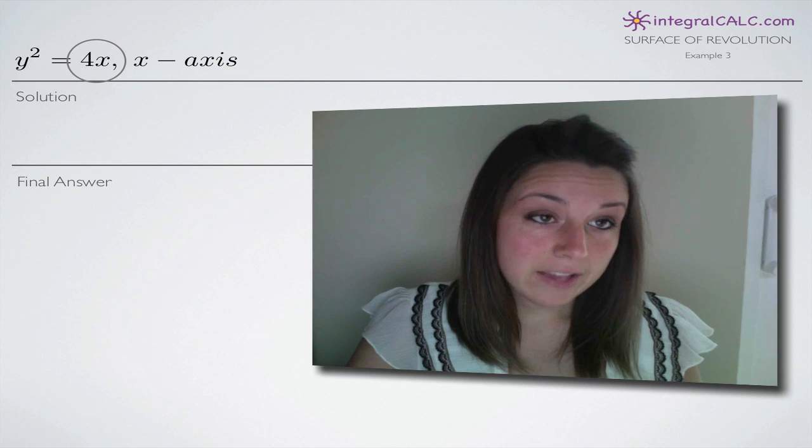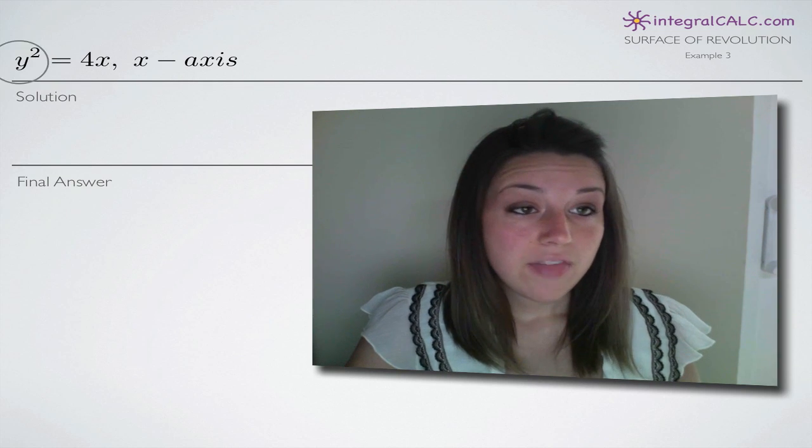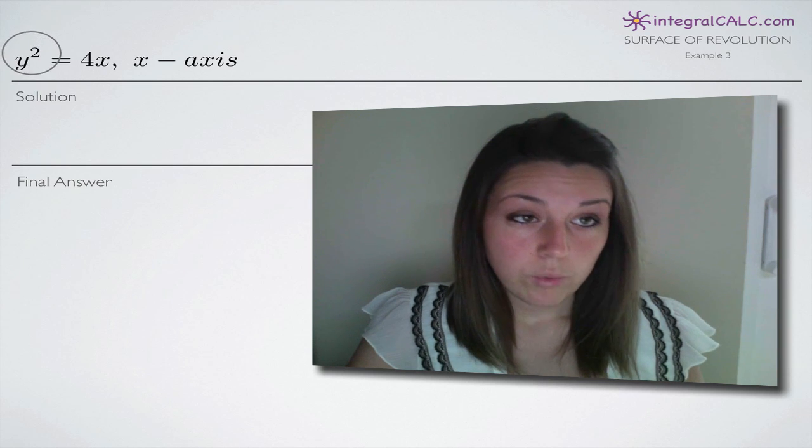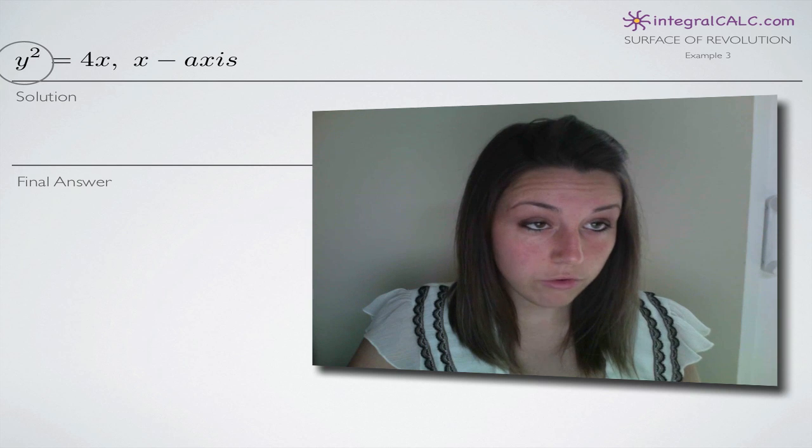We're also going to leave untouched anything outside of the other variables in the problem. So because we're ignoring x and we're leaving everything else alone besides the other variable in the problem, that means we're only looking at the y variable. We'll leave the squared alone and we'll leave 4x alone.